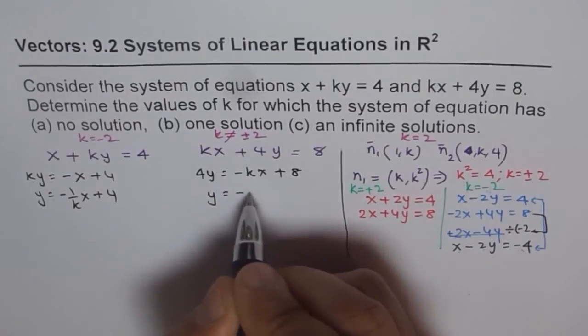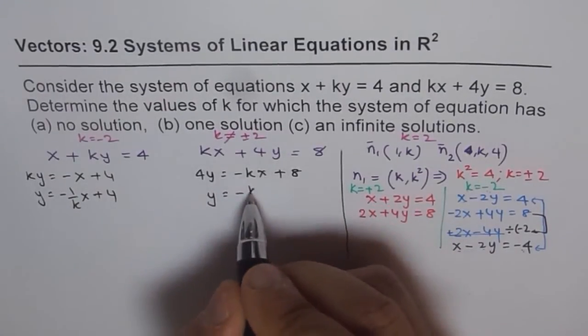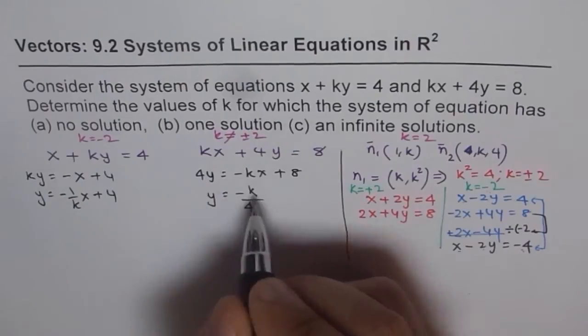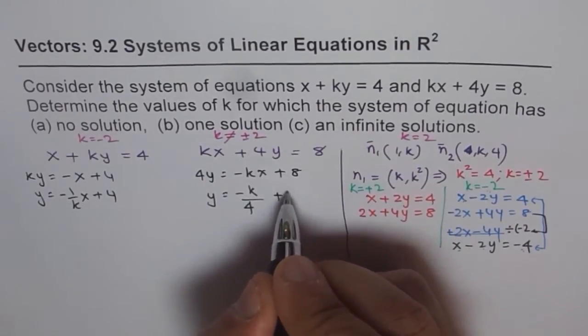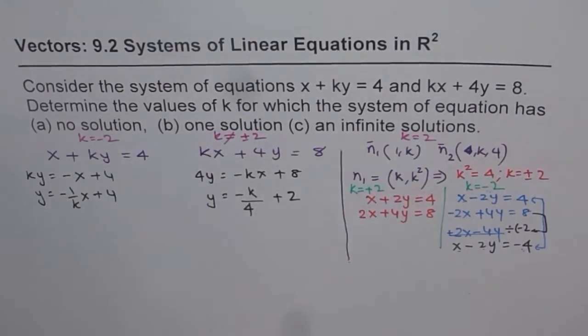And here, we can write 4y = -kx + 8, and y = -k/4 x + 2. So these are our two equations.